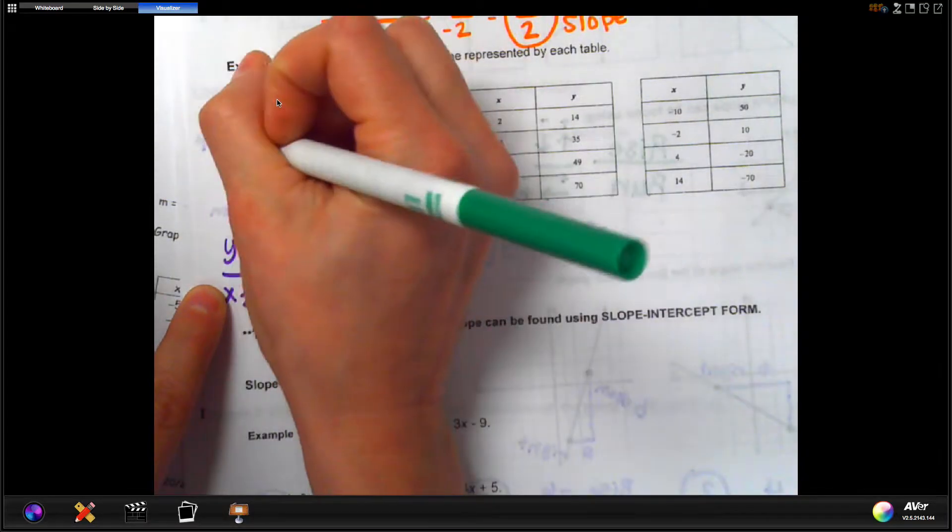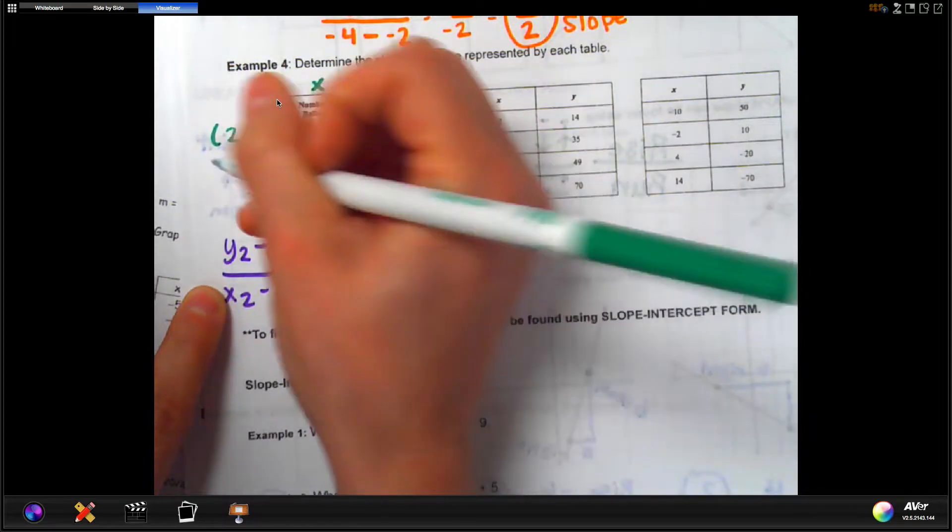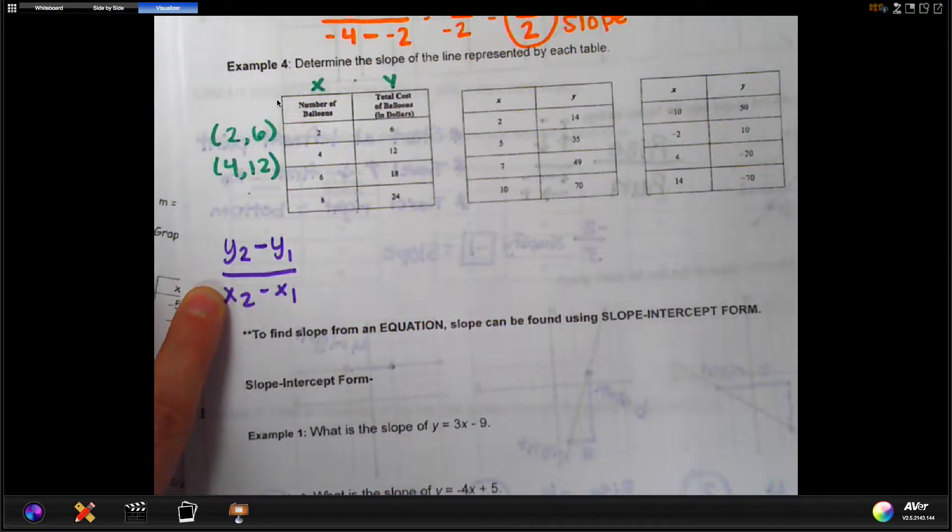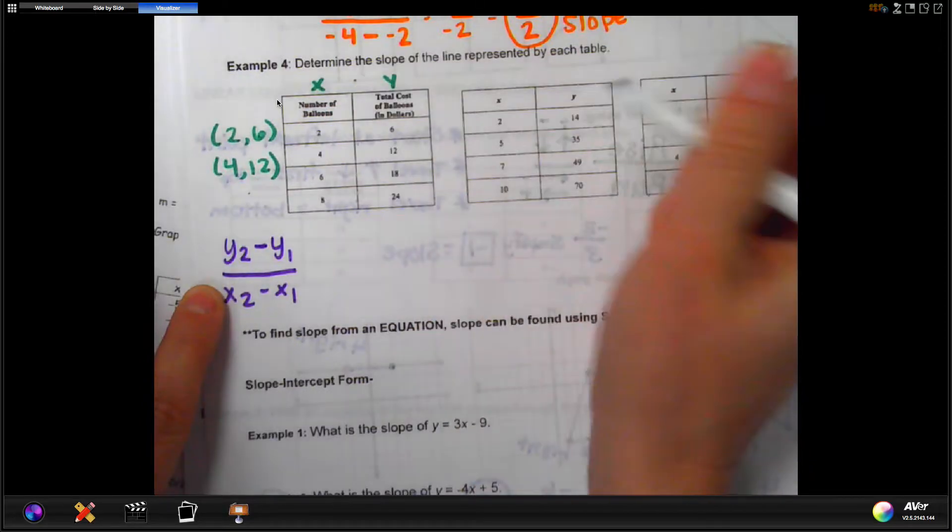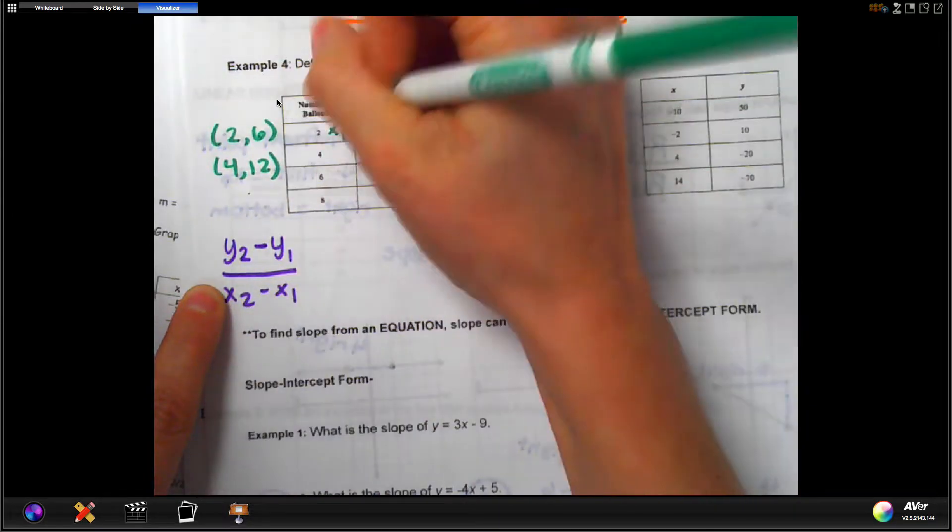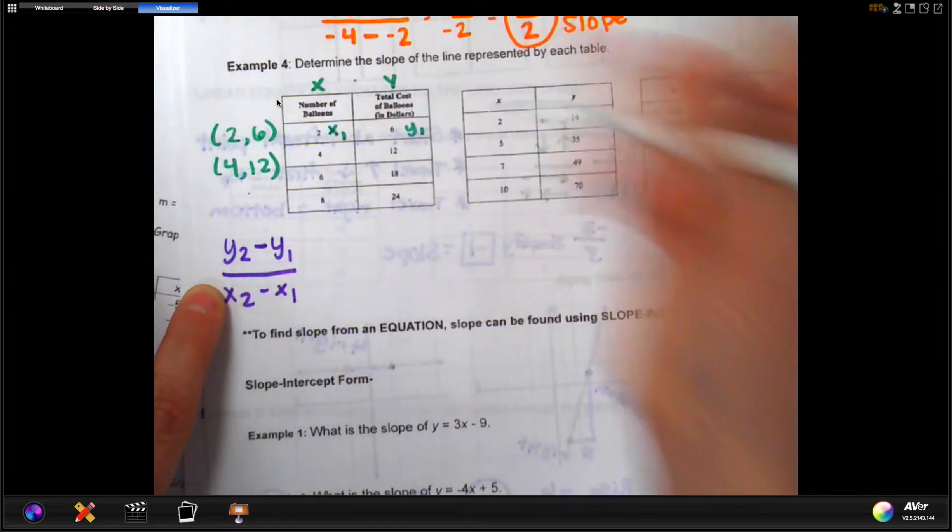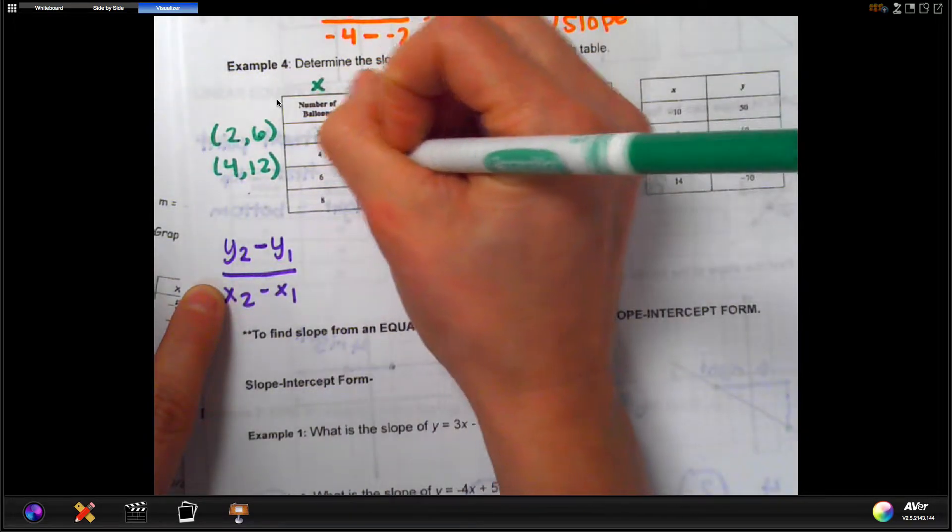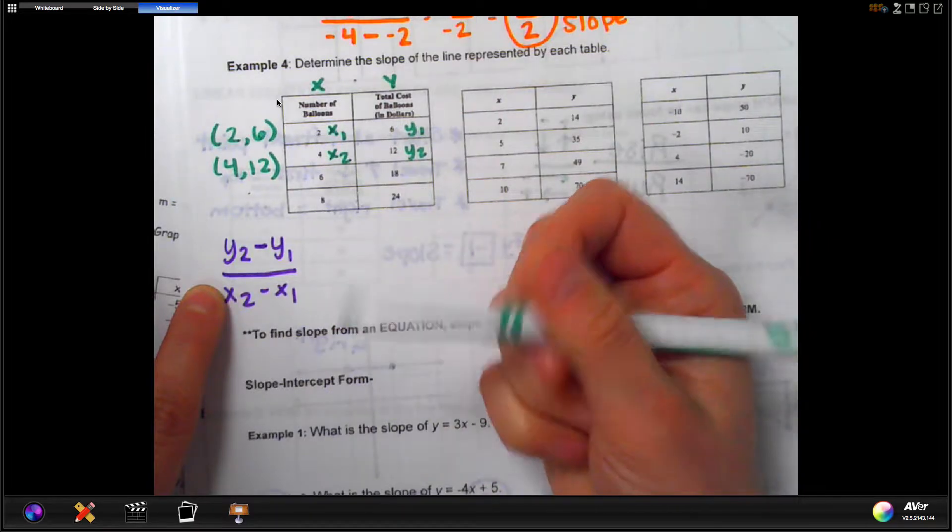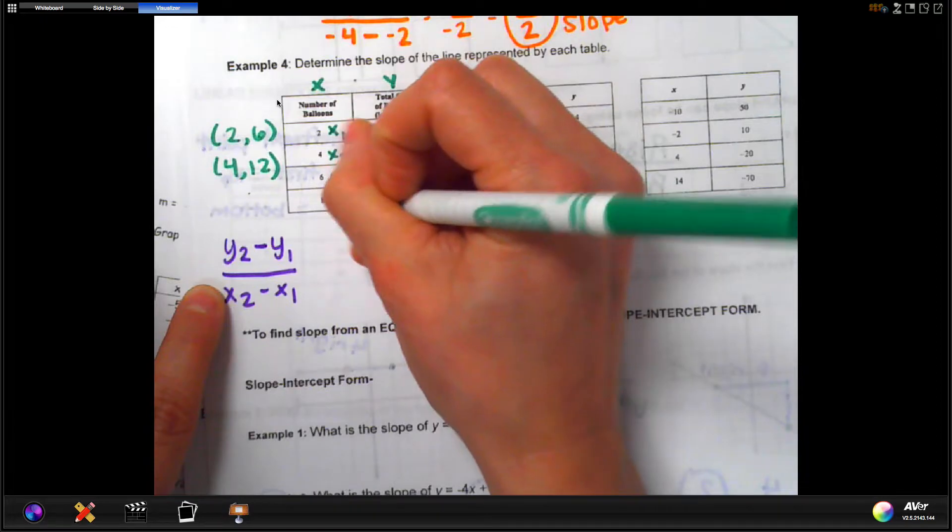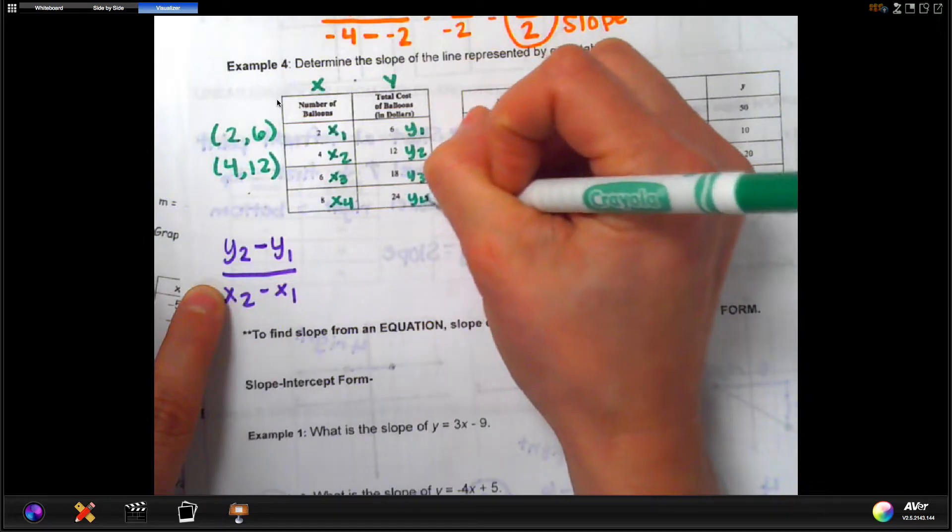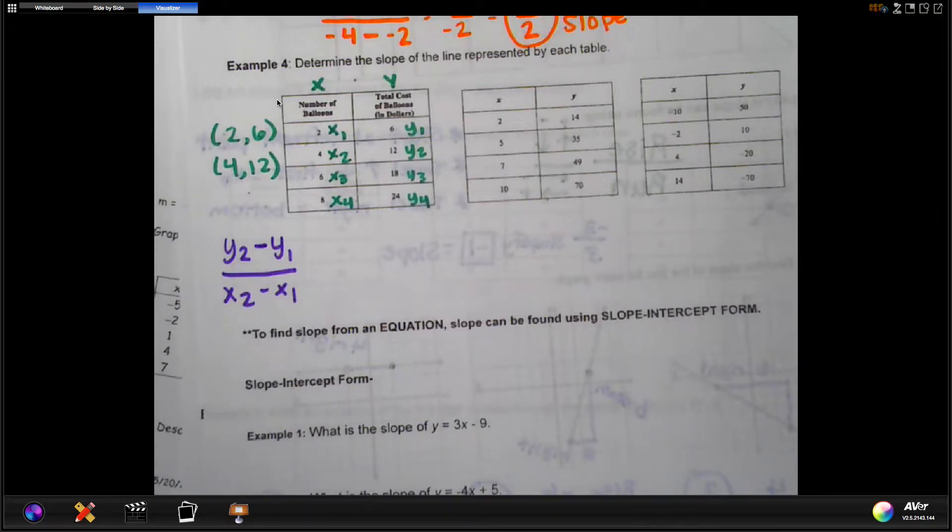And so this could be written as 2, 6 and 4, 12, 6, 18 and so on. So the reason I point that out is because if you're thinking about this, the 2 is technically your x1 value. It's the first x given in the table. And the 6 would be your y1 value. The 4 would be x2 and the 12 would be y2. And now technically, you are given more information than you need. 6 would technically be x3 and 8 would be x4 and so on. 18 would be y3. 24 would be y4. But you don't need all that information if you're asked to find the slope. All you need are two points. So we're going to use y2, y1, x2 and x1 to figure this out.